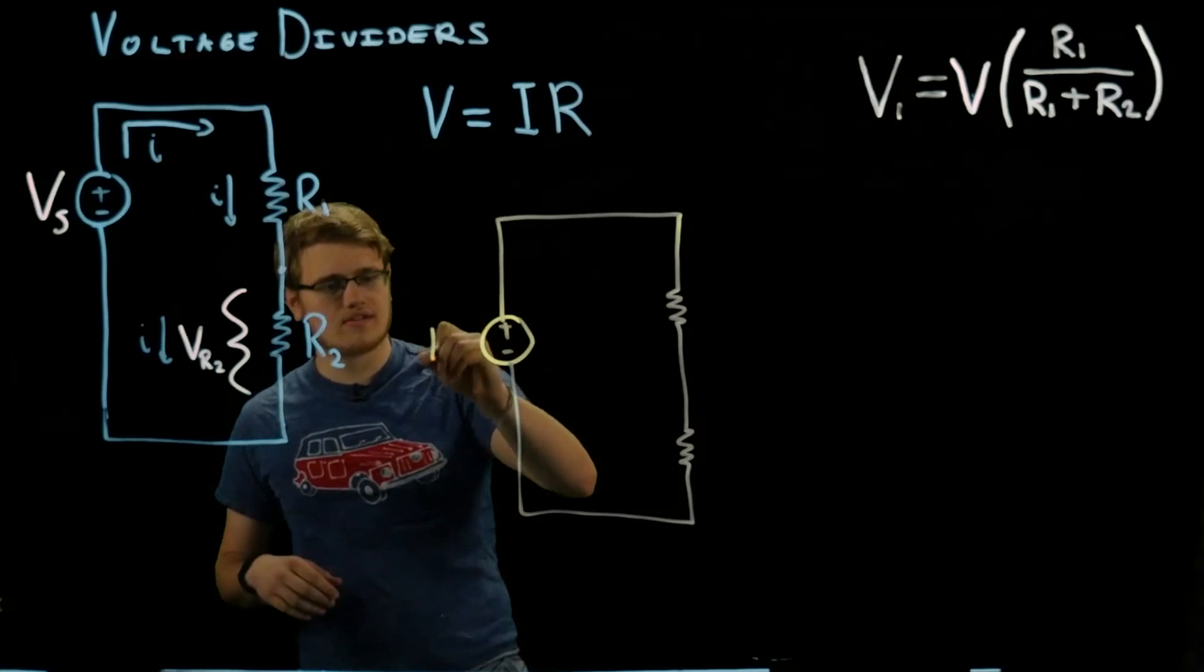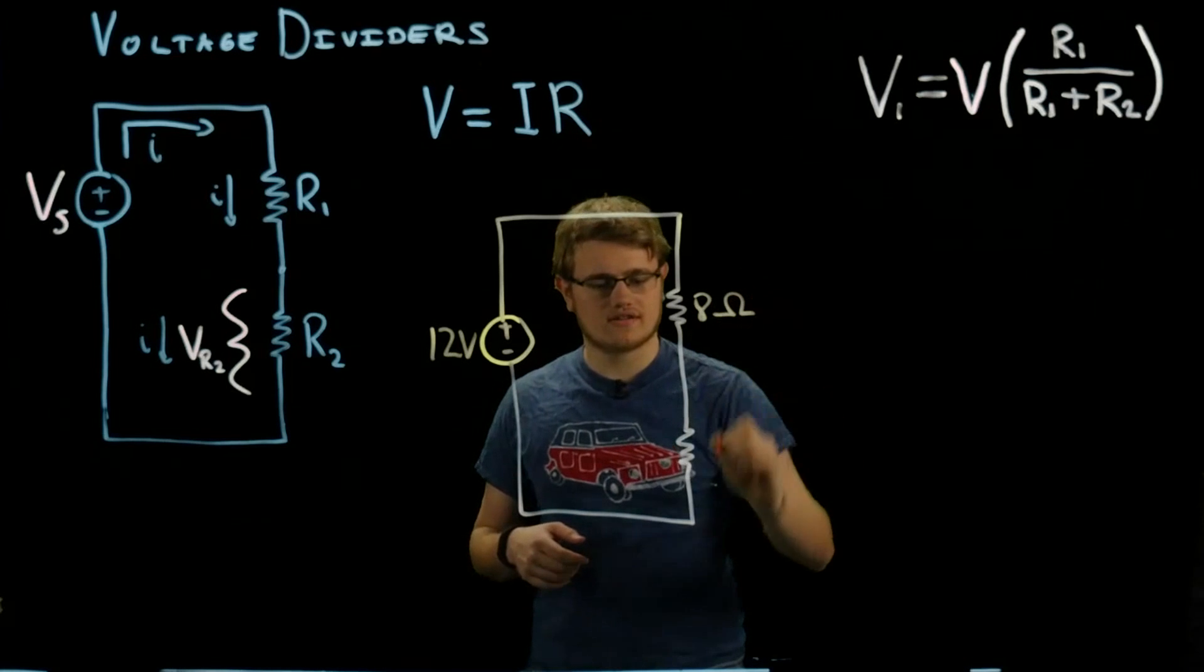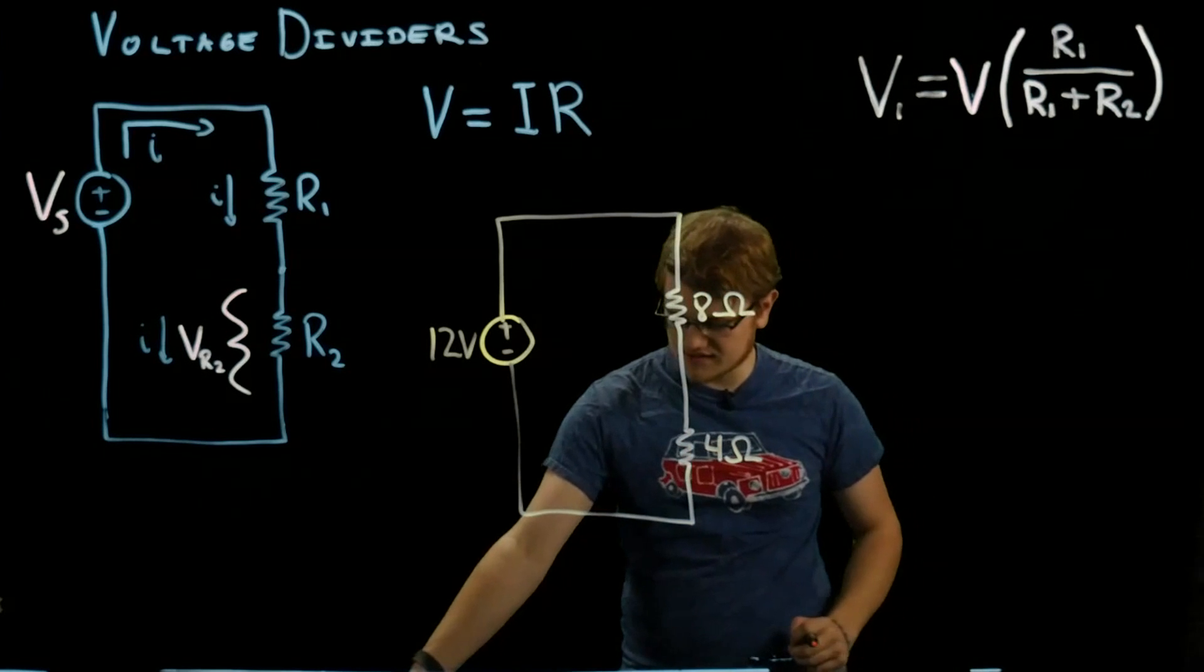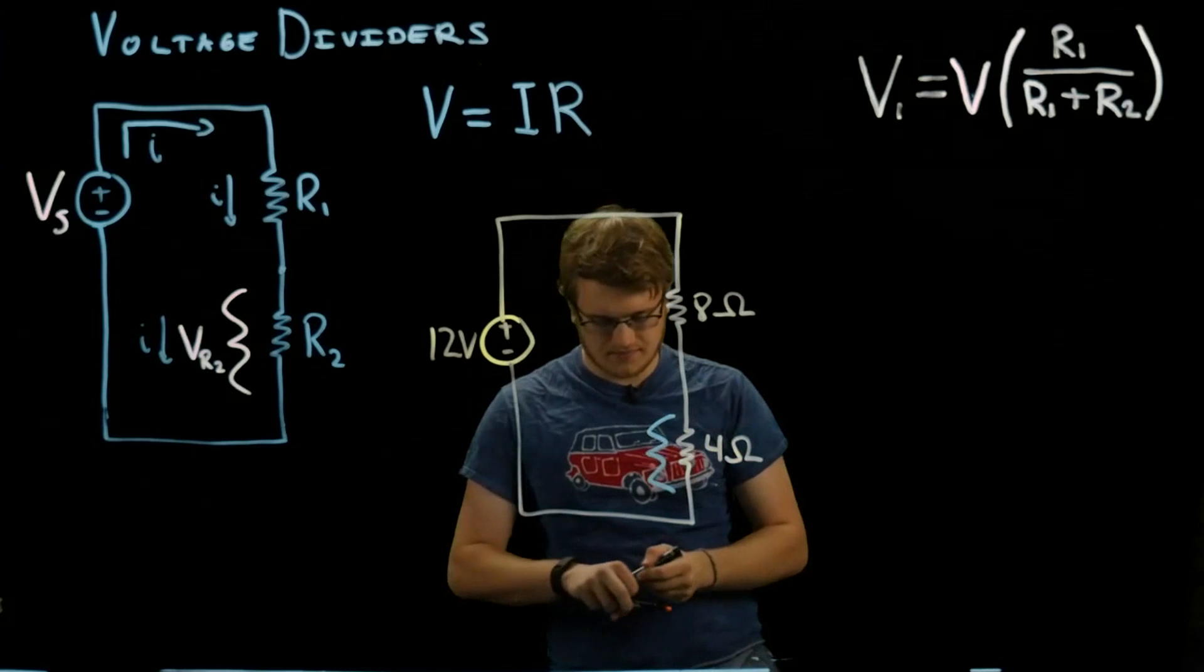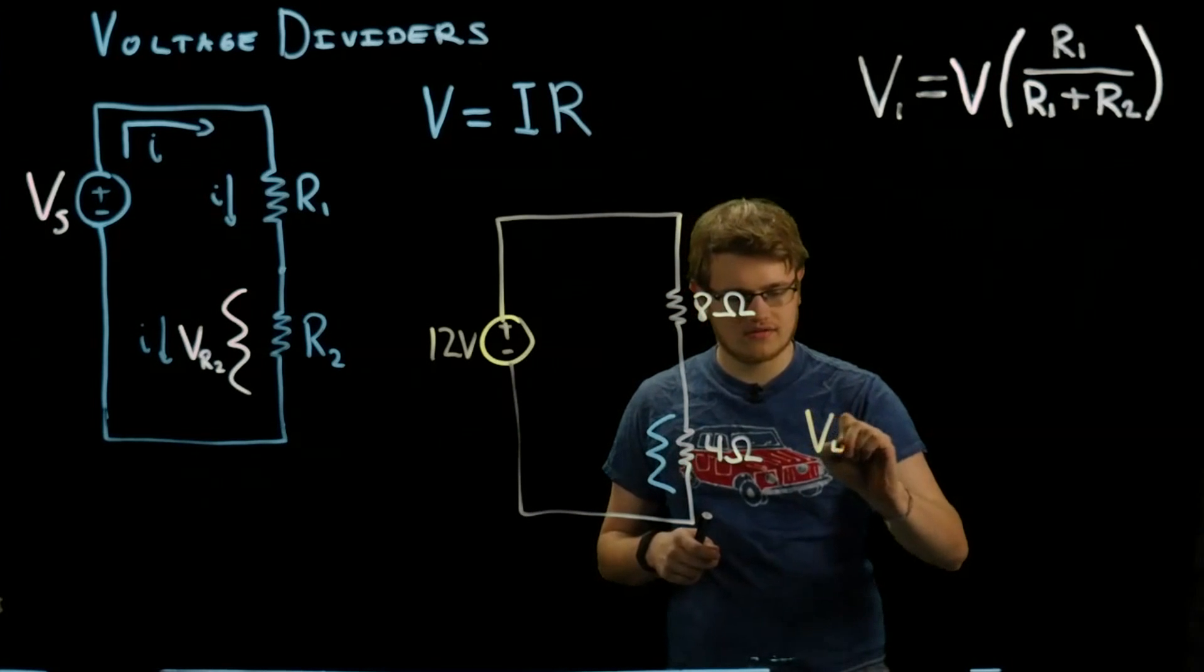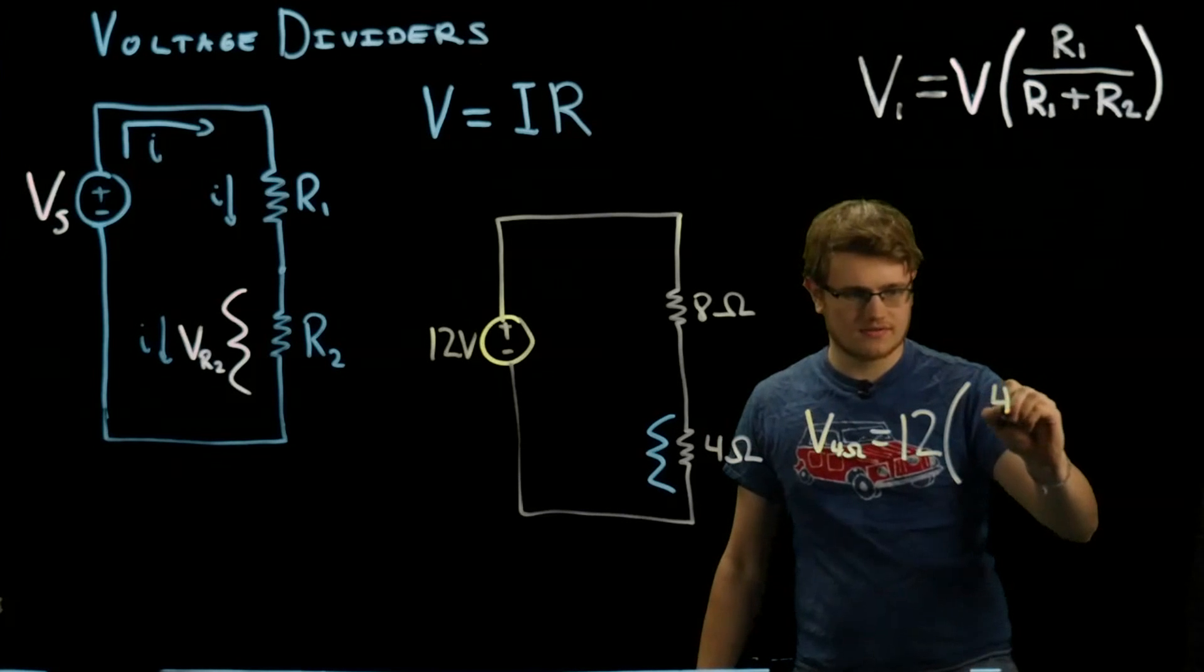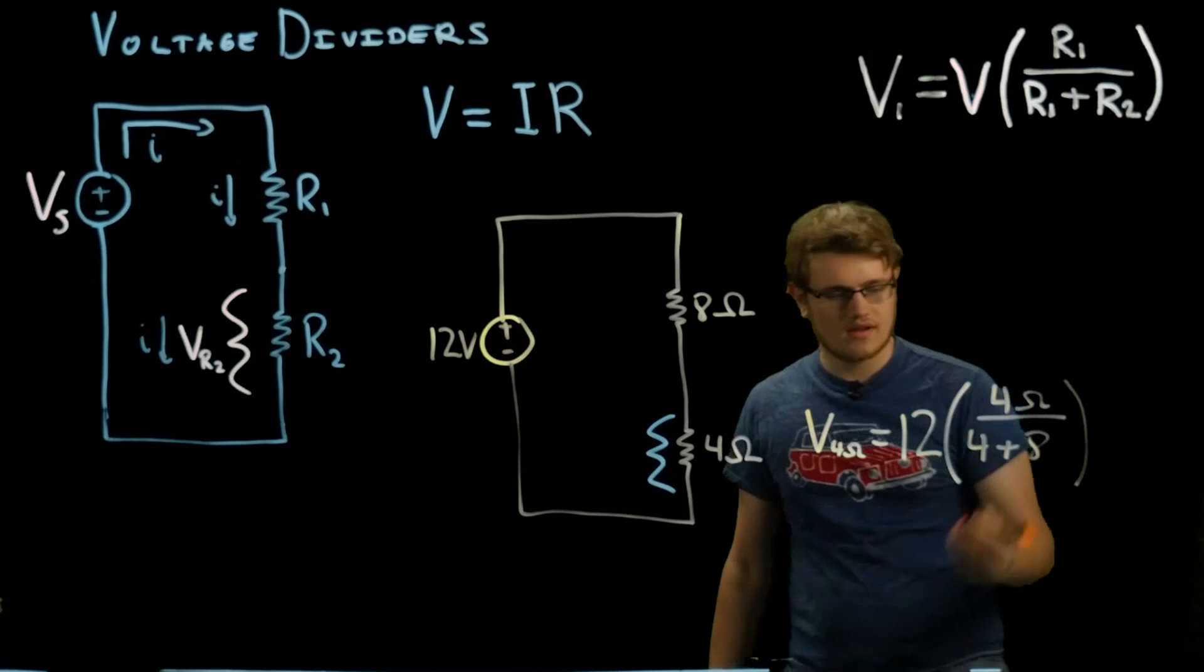We've got 12 volts here, and we're going to do an 8 ohm resistor here and a 4 ohm resistor here. If we wanted to find the voltage going across that 4 ohm resistor, we do 12 volts times 4 ohms over 4 plus 8.